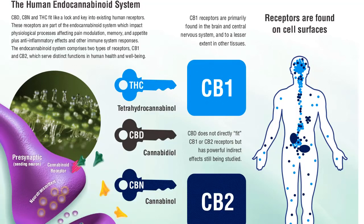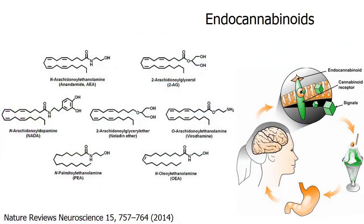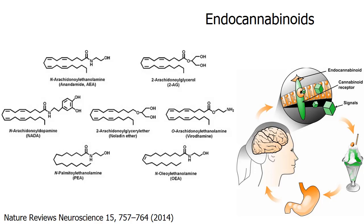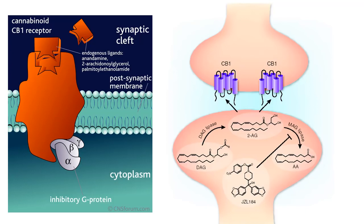First we need to understand the different classes of cannabinoids. Your body manufactures endocannabinoids, and these have abbreviated names like 2AG, AEA, and NADA. These substances are made by your cells to regulate the way your various systems work. In order for these signals to do anything, they have to be received, and for that we need a receptor protein on the surface of a cell. A cannabinoid receptor is a very specialized tool that detects one of these endocannabinoids and passes the signal to the cell to respond appropriately.